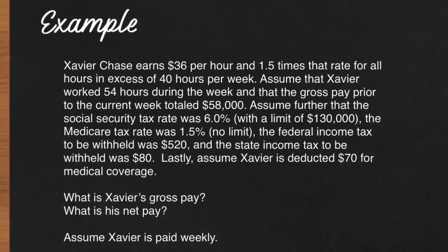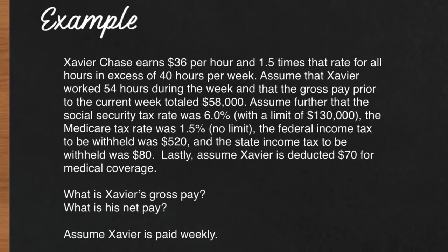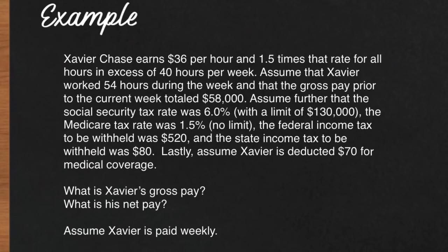Let's go to our example here. We have an employee, his name is Xavier Chase, earns $36 an hour, and qualifies for time and a half for any hours worked over 40 hours per week. Feel free to screen capture or take a picture of this problem as we will use it for our calculations. There is a lot of information there, so take note of that.